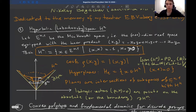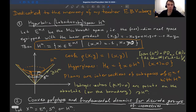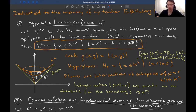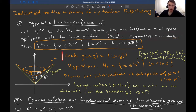We mean discrete groups generated by reflections and acting properly discontinuously on hyperbolic spaces. The hyperbolic space is given by the hyperboloid — specifically the above component of the two-sheeted hyperboloid in the real Minkowski space — given by the standard symmetric linear form of signature (n,1).